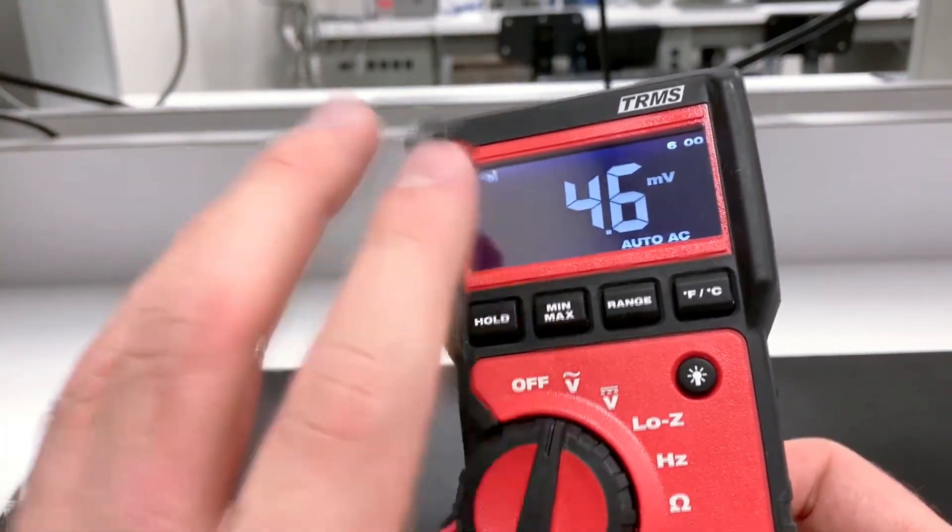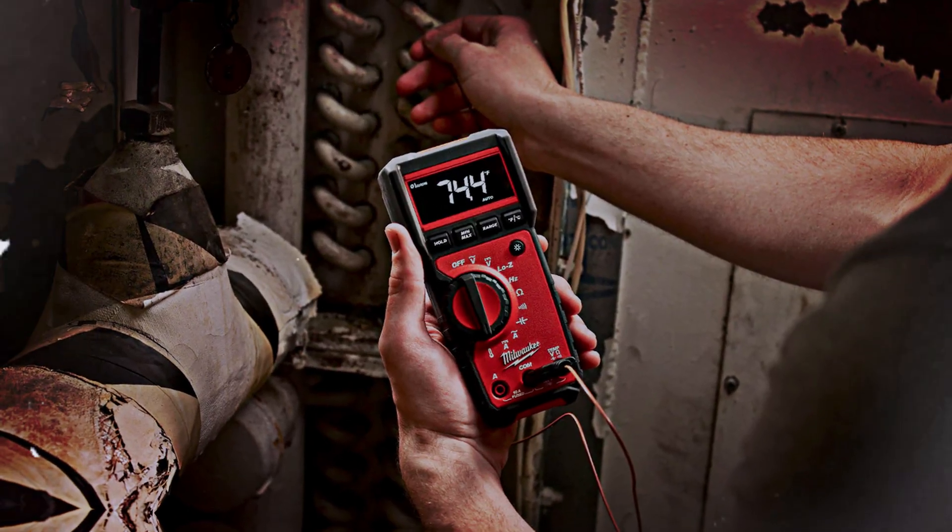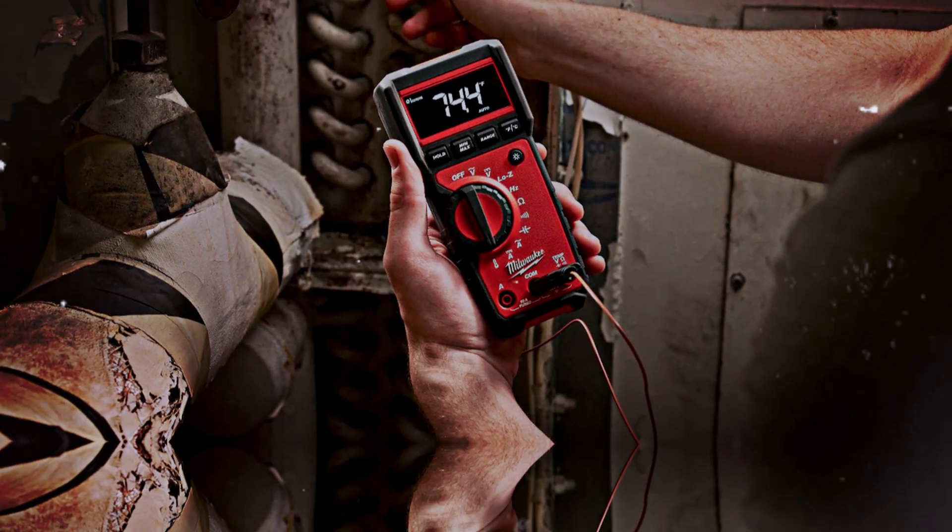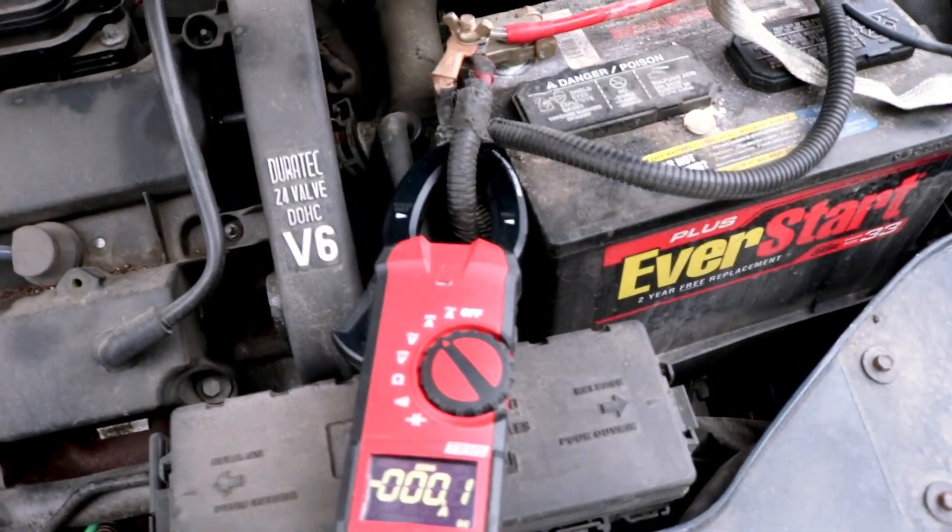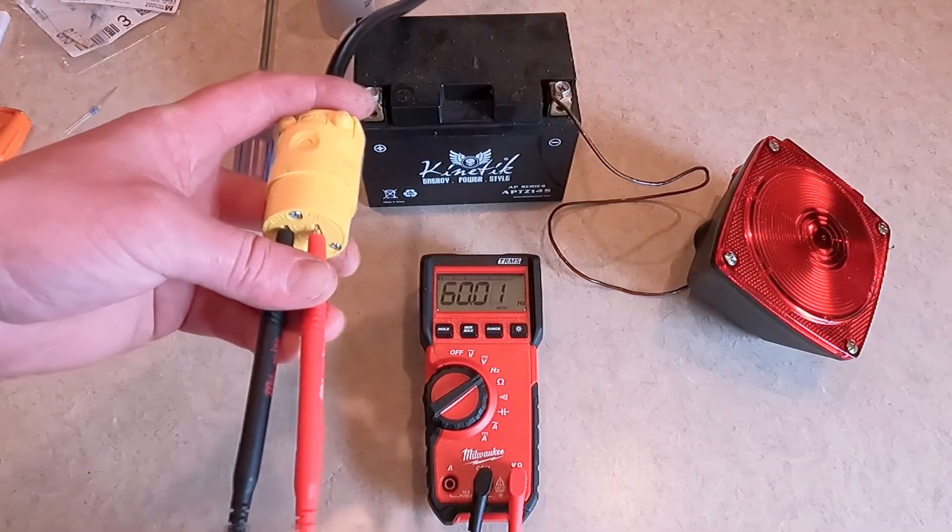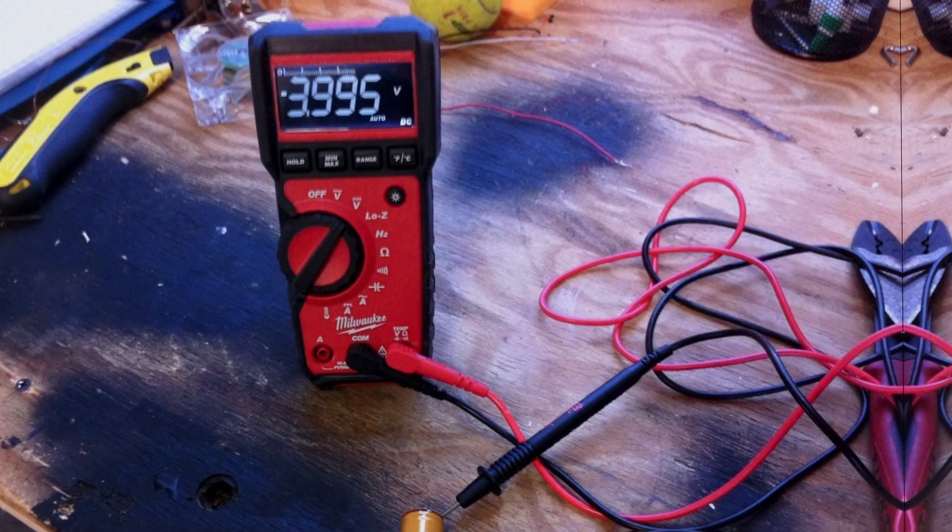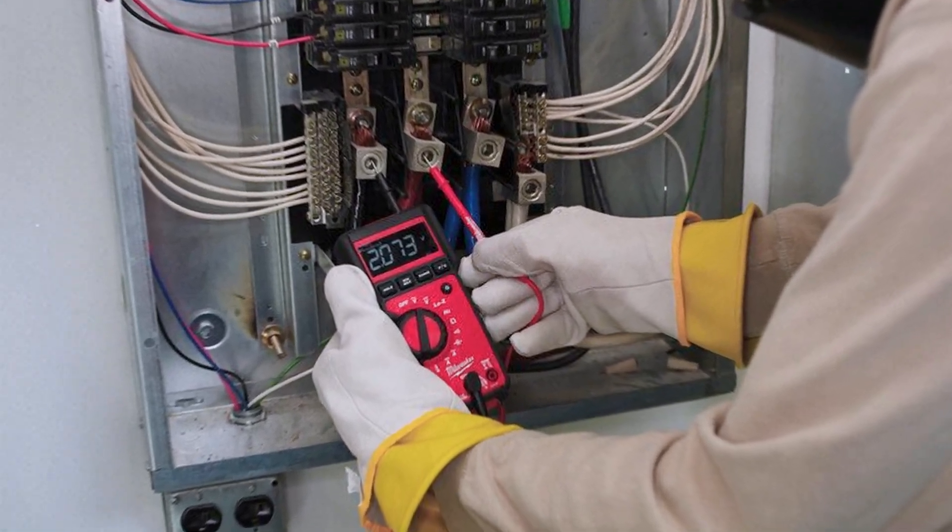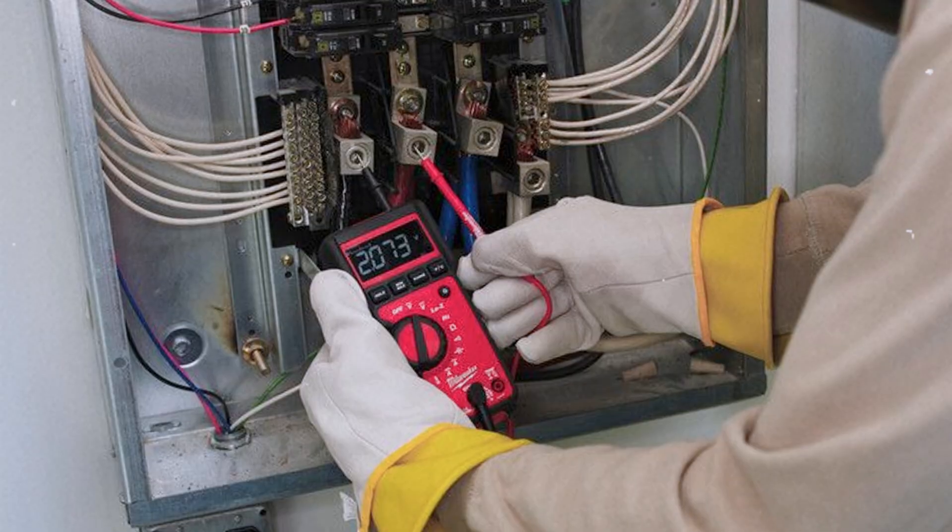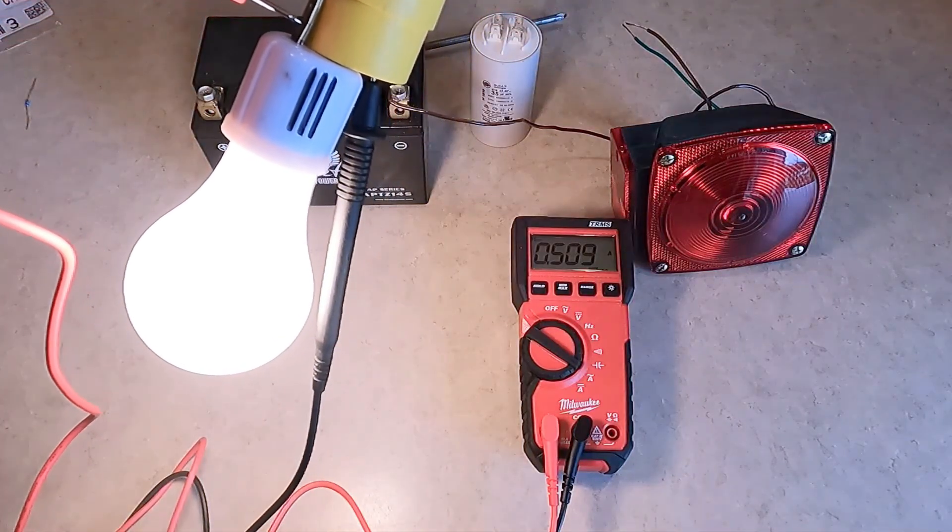A backlit LCD display makes reading measurements effortless, even in dim environments. Automatic ranging lets you easily measure voltages as low as millivolts, which is invaluable for diagnostics. You can work confidently with both AC and DC voltage up to 600 volts. Capacitance and frequency measurement features elevate this device beyond basic models. With its ergonomic design, you'll feel comfortable gripping it during long sessions. The sturdy construction ensures it withstands the rigors of daily use in tough conditions. That durability is crucial for professionals who depend on their tools.